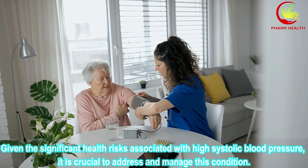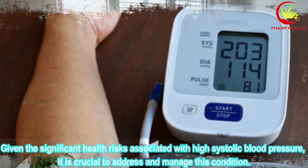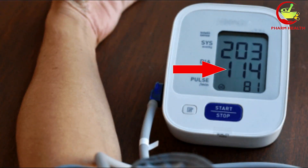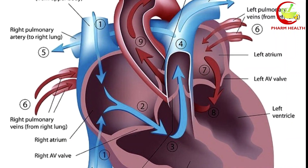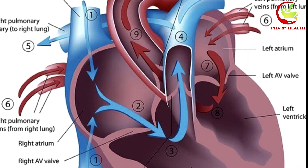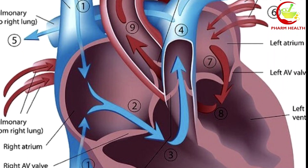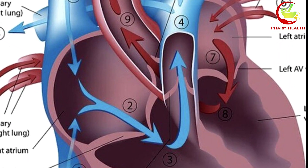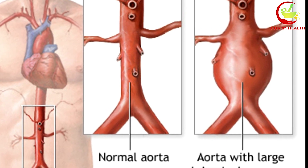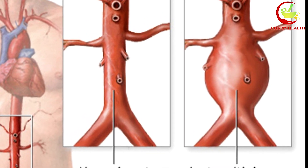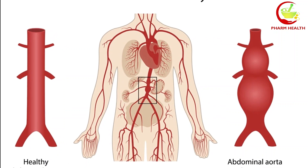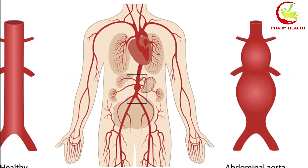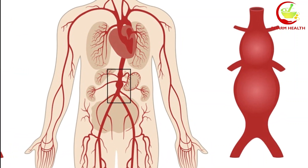High diastolic blood pressure can lead to the weakening of the aorta, the primary artery in your body. This artery runs from your heart through your abdomen and then divides into separate arteries extending into your legs. If a segment of the aorta in the abdominal region becomes weaker, it could develop into a bulging area due to excessive stretching. Prolonged high diastolic pressure could potentially result in the rupture of this bulge, leading to severe internal bleeding that can be fatal. The medical term for this life-threatening condition is abdominal aortic aneurysm.